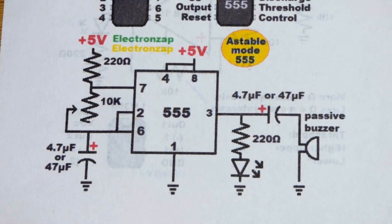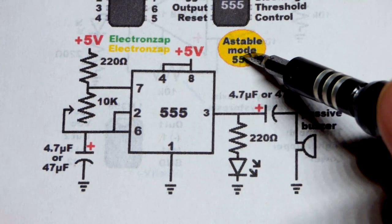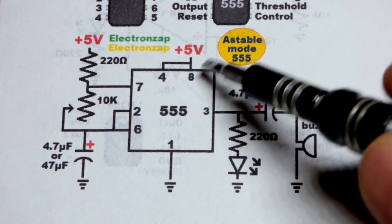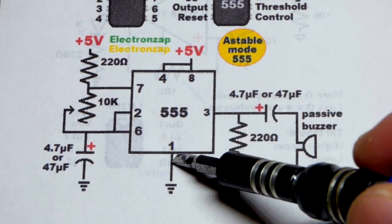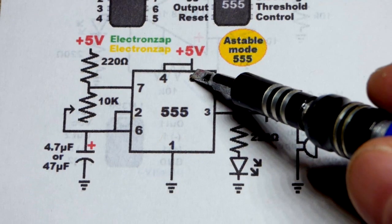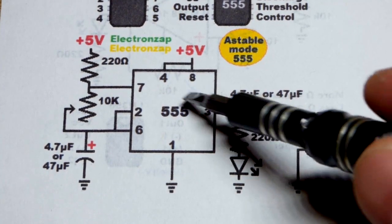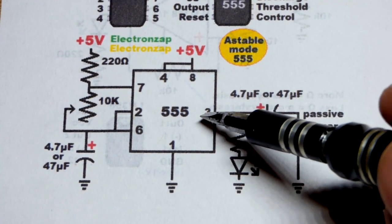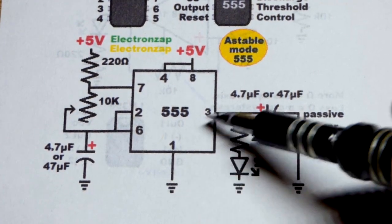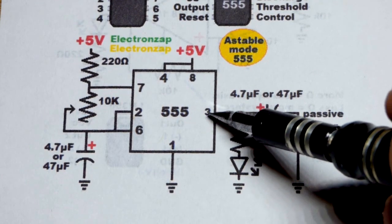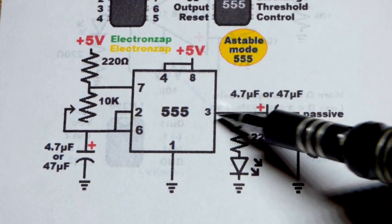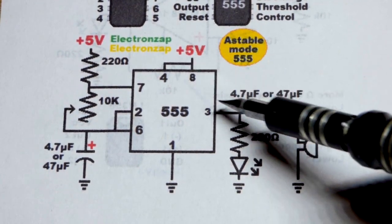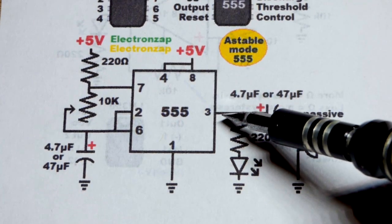And here is the schematic. Main thing is we got it in astable mode right there. We are powering it—we already went over this, so I'm going to go over it quickly. Pin eight and pin one, that provides the power for the internal circuitry and for the output when it goes high and low. When it goes low, it connects pretty close to ground, almost perfectly, and as close as it can to the positive supply, probably closer to three and a half volts or something, maybe four.